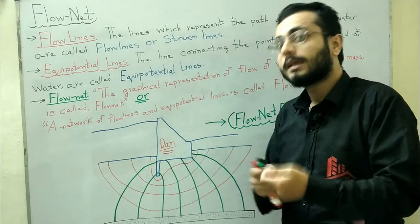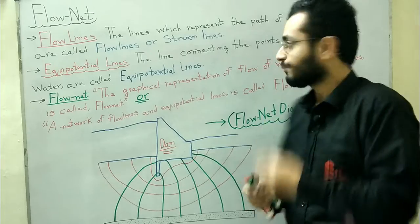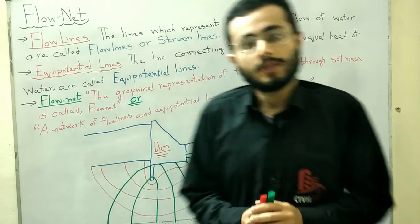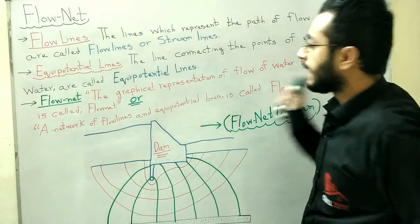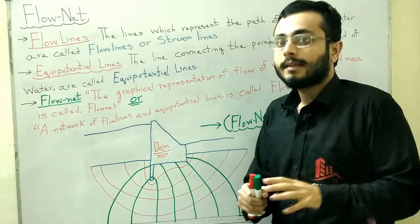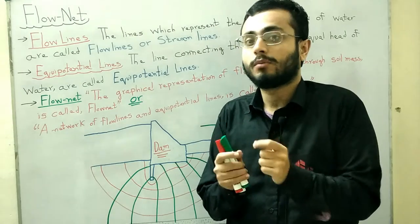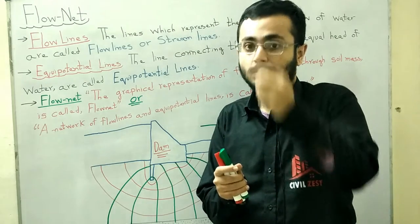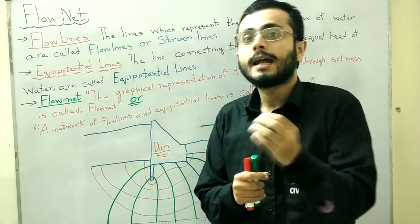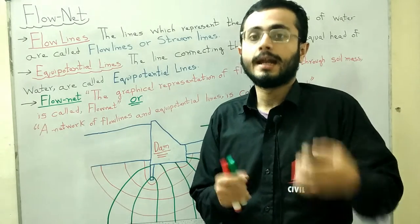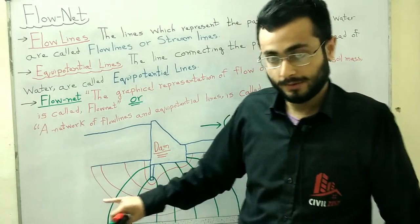What are equipotential lines? The lines connecting the points of equal head of water — all points on the equipotential line are at the same head. Head means pressure energy, the pressure energy of the particle at that point.